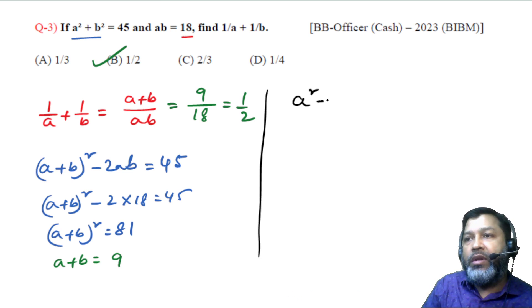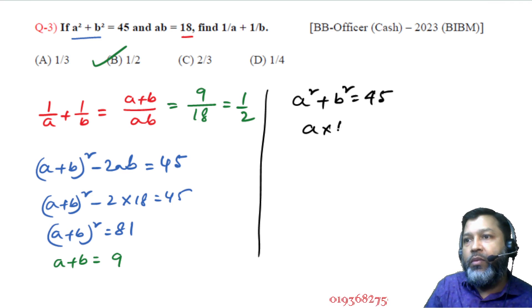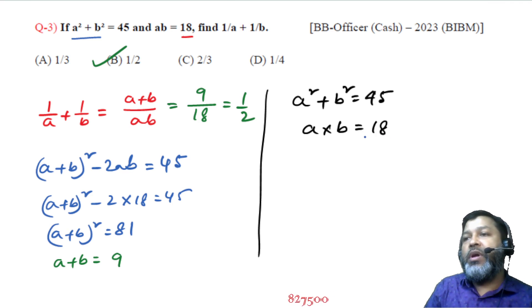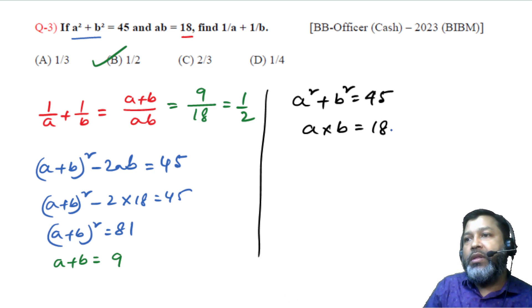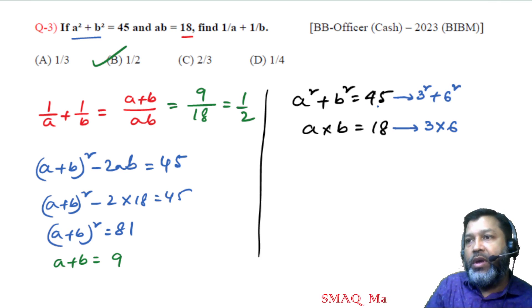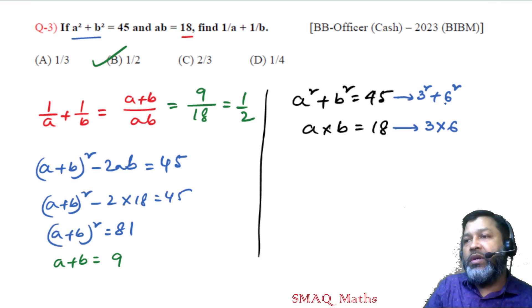Verification: a plus b is 18 can be factored as 2 into 9 or 3 into 6. Checking with a equals 3, b equals 6: 3 squared plus 6 squared equals 9 plus 36 equals 45, which confirms the condition is satisfied.